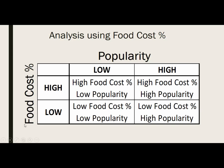In the matrix analysis comparing popularity and food cost percentage, on one axis we have high and low food cost percentage — low being positive, high being negative — and popularity, high being good and low being bad. If you go through each area: high food cost percentage is negative, low popularity is negative. So any items with higher than average food cost percentage and lower than average popularity are negative items.